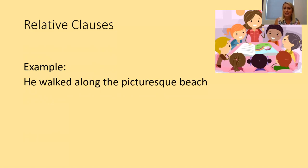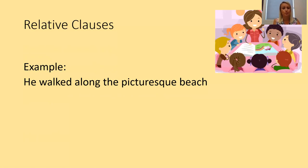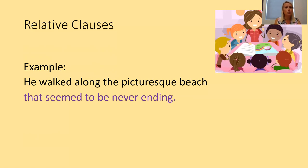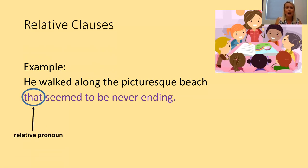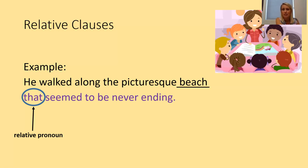Another example: 'He walked along the picturesque beach.' This main clause makes sense on its own. I'm going to use a relative clause to modify the noun 'beach.' Here we are: 'He walked along the picturesque beach that seemed to be never-ending.' Here I've got my relative pronoun 'that', which relates back to the noun 'beach'. We'll look at one further example before we link it back to our learning about the Amazon rainforest.